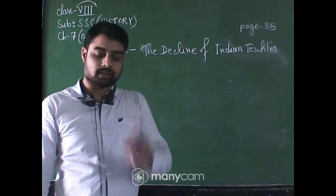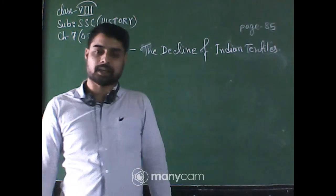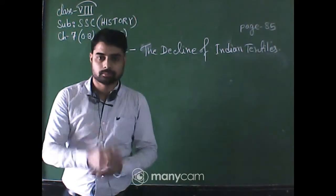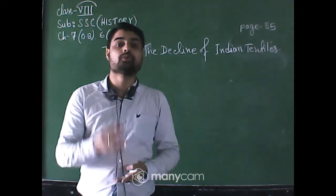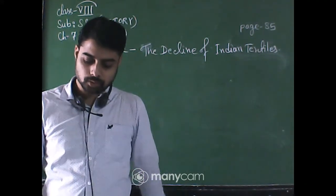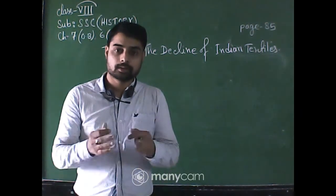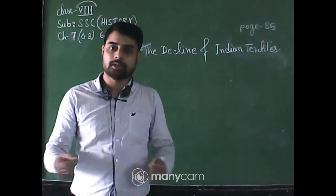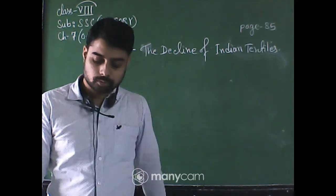In the 1830s, British cotton cloth flooded the Indian market. By the 1880s, two-thirds of the people of India were wearing Western or European textiles, mostly produced in Britain after the Industrial Revolution. Specialist weavers and spinners, including many rural women involved in spinning cotton into thread, also became jobless.